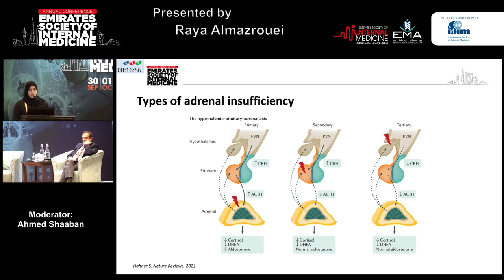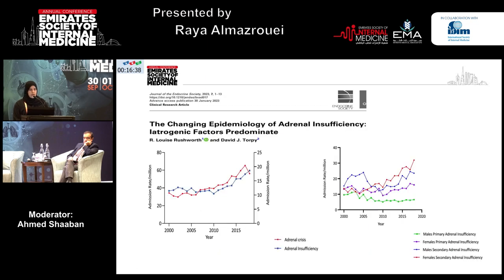In both secondary and tertiary adrenal insufficiency, where the defect is at the pituitary and hypothalamus respectively, there will be only a reduction in the production of glucocorticoid and adrenal androgens. However, mineralocorticoid production will be preserved.